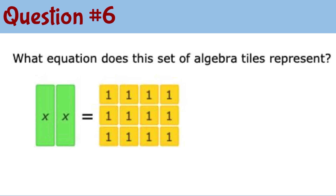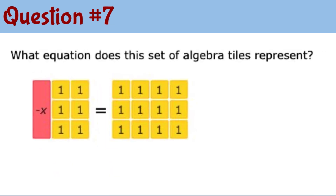Question 6: on the left we have 2x tiles, and on the right side we have 12 unit tiles. So the representation for this algebra tile equation is 2x equals 12. For question number 7, the left side involves a negative x tile, so we have negative x, and there are 6 positive 1 tiles, giving us negative x plus 6. On the right side there are 12 positive unit tiles, so negative x plus 6 equals 12.